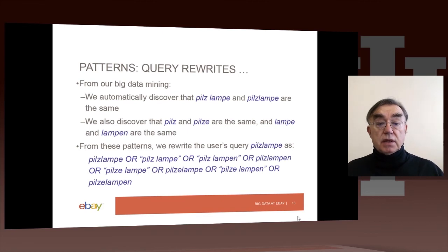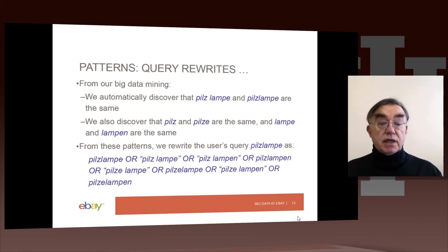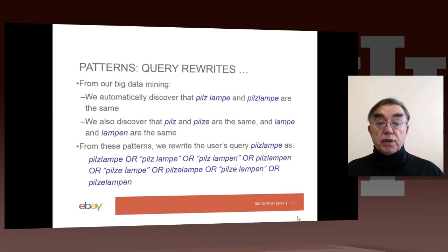You can discover patterns — for example, you could have a rule that whenever there's an 'e' followed by 'l', you insert a space. But that may not be very accurate. Here, we're actually using the data to show that 'Pils' followed by 'lamp' should have a gap as a possibility. That's data-driven rather than rule-based.